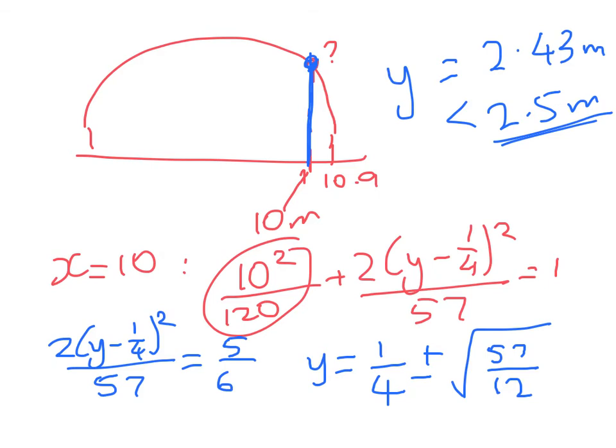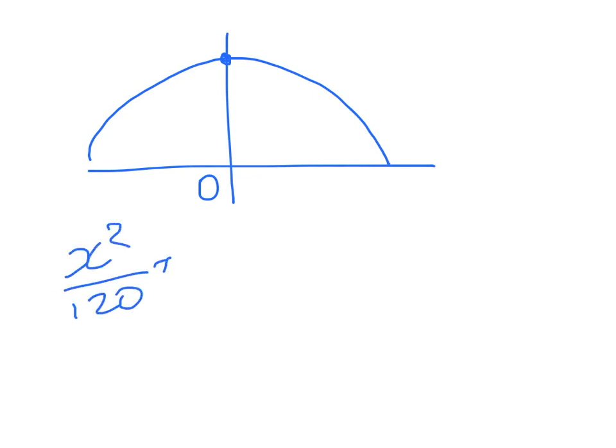Now we're going to check the cover. We need to check if it is 8 metres or less. So to do that, let's think about where the maximum point of the cover is. We've got to check that's not too big. Well, it's going to be x equals 0. So this is easy. We've got x squared over 120 plus 2y minus 0.25 squared over 57 equals 1. And we're going to substitute in x equals 0.